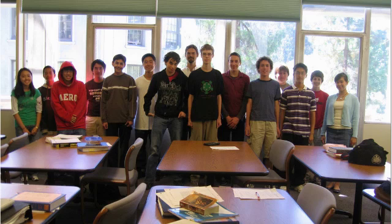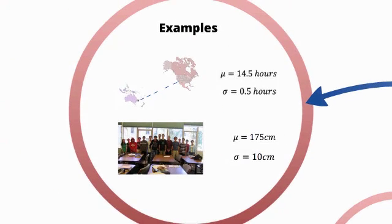As another example, let's look at the heights in a classroom. Most people are around the same height, let's say around 175 centimeters. But we know that there are a few people who are really small, and also a handful of others that are really annoying to stand behind in concerts. Both of these distributions could be defined by normal distributions. You can see the first one has the mean of 14.5 hours, and a standard deviation, let's say, of 0.5 hours. And the second one has a mean of 175 centimeters, and a standard deviation of 10 centimeters.